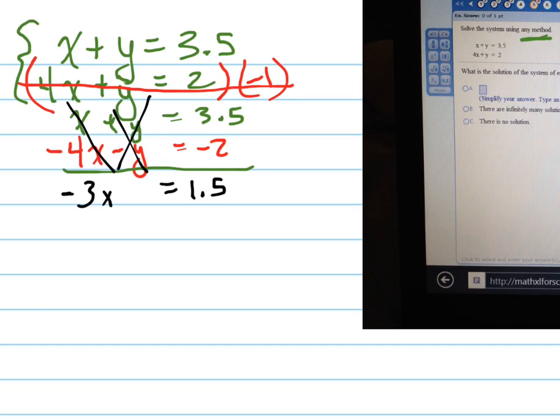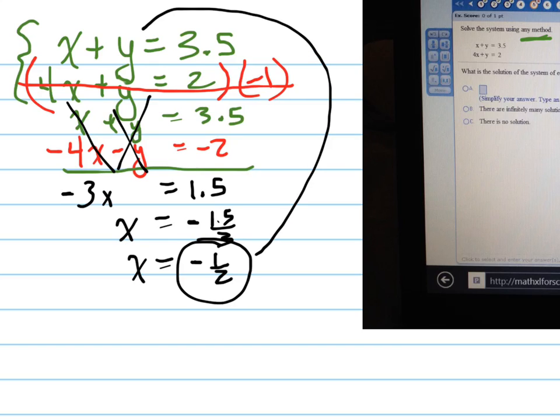Now I divide both sides by negative 3, and I get negative 1.5 over 3, which equals negative 1 half. Now that I have x, I can plug that back into either equation for x.